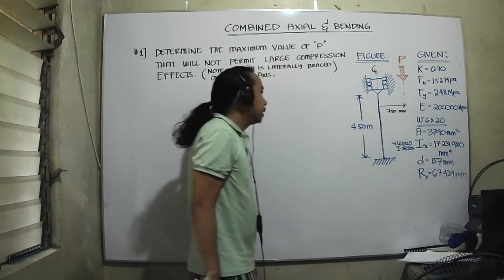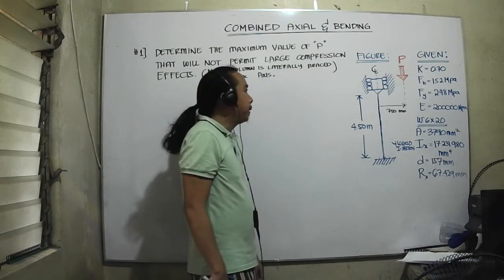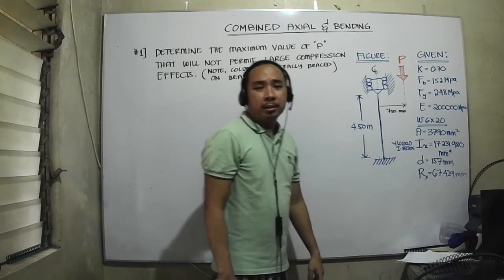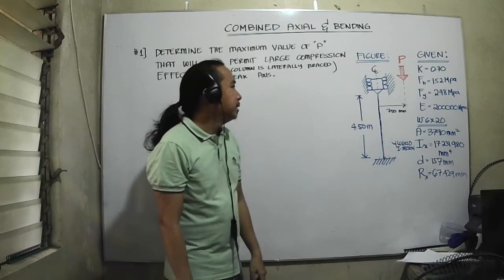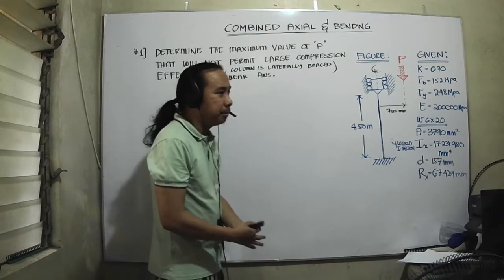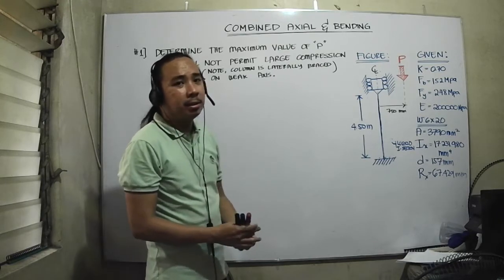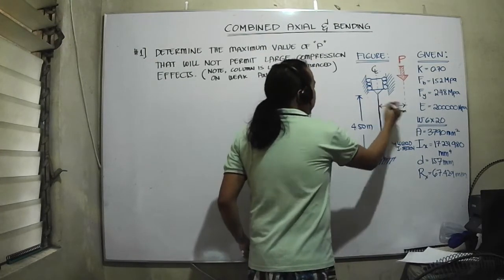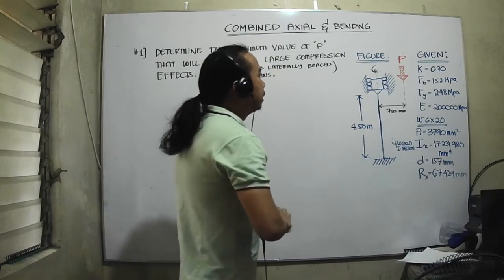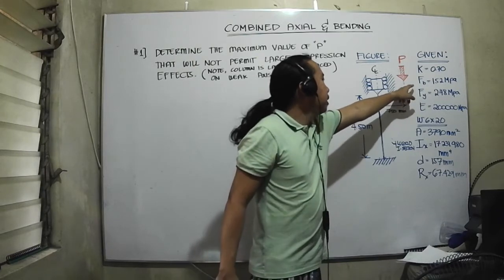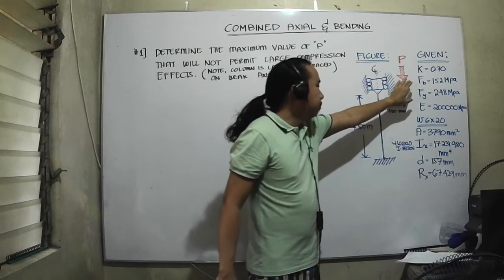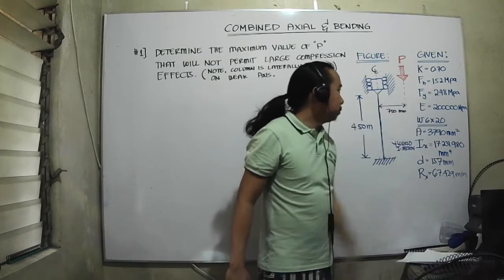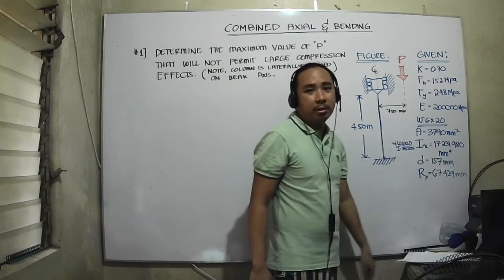The braced length is around 4.5 meters. I chose this particular problem because the figure of the structural member is very unusual — previous examples were mostly simply supported. The corresponding K value to be used is 0.7. We have also been given the allowable bending stress: FB is equal to 150 MPa, FY is equal to 248 MPa, and E is equal to 200,000 MPa or 200 GPa.